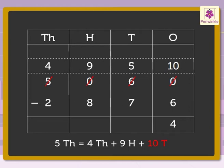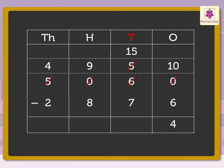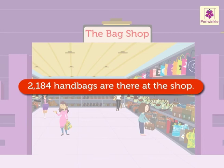To these ten tens, we add the five tens already there to get fifteen tens. Now, subtract the tens: fifteen minus seven is equal to eight. Subtract the hundreds: nine minus eight is equal to one. Lastly, subtract the thousands: four minus two is equal to two. Thus, there are two thousand one hundred eighty-four handbags at the shop.